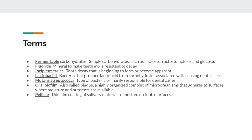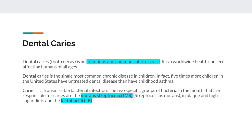The main bacteria to know: mutans streptococci is primarily responsible for caries, and lactobacilli produces acids which cause cavities. If there's no bacteria, there's no acids, there's no cavities. The oral biofilm — also known as plaque — and pellicle go hand in hand; you need pellicle before plaque. You need to know the two main bacteria — mutans streptococci and lactobacilli. When you see these, know they have to do with caries — not gingivitis, not perio. None of that. Caries only.